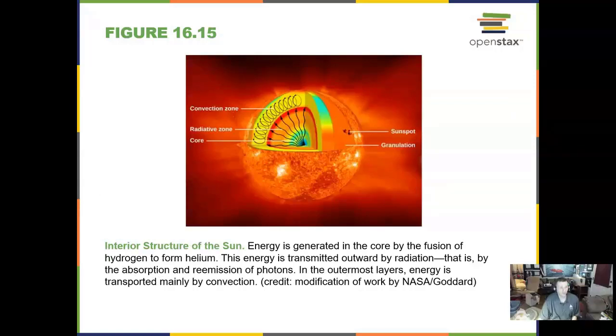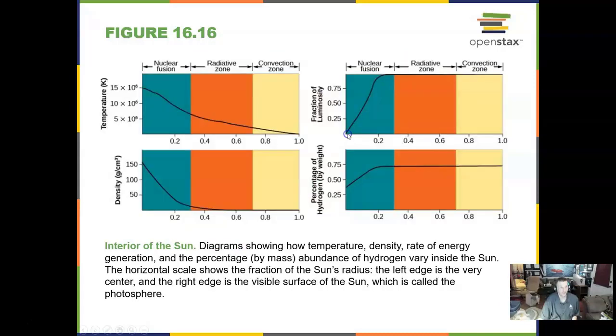Now we saw the interior structure of the Sun in Chapter 15. To review, we have a core in the middle, the radiative zone going out two thirds, and then the convective zone. The process by which radiation is moved in these zones is different. We have sunspots and granulation on the surface, on the photosphere.